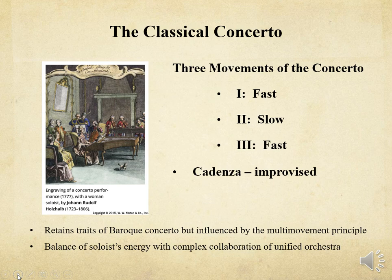In the classical era, most concertos were written for solo instrument and orchestra. The three movements of a classical concerto follow the fast-slow-fast pattern established in the Baroque era. A unique feature of a solo concerto is the cadenza, a brilliant solo passage in the manner of improvisation that interrupts the movement towards the end. The orchestra is silent as the soloist launches into a display of virtuosity, often centered around one or more themes of the movement, thus creating a very dramatic effect.